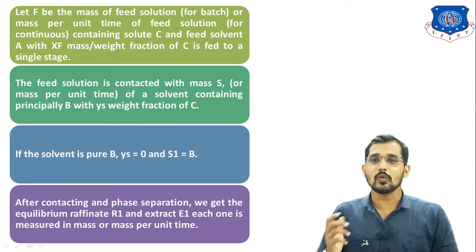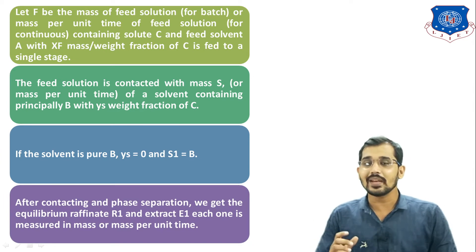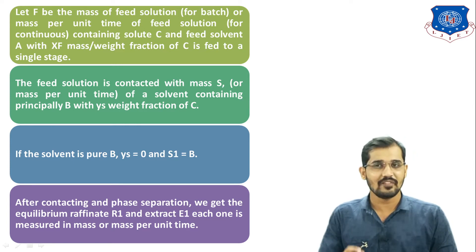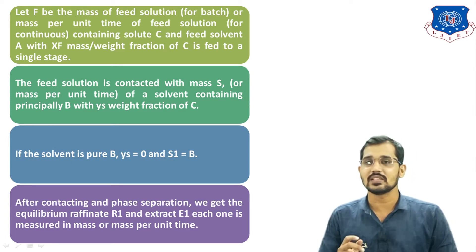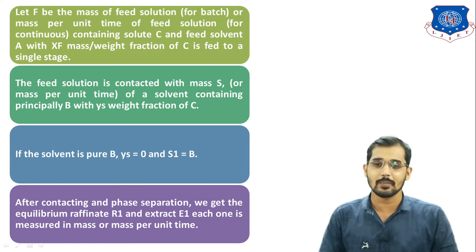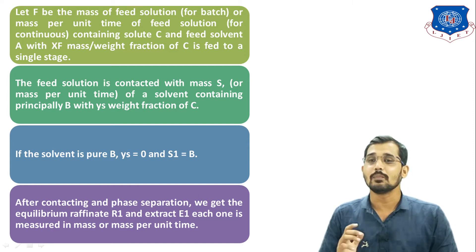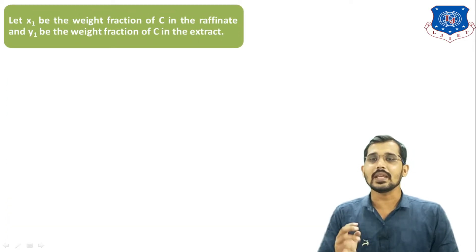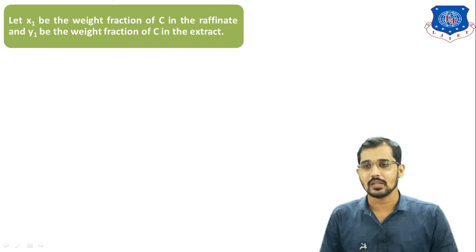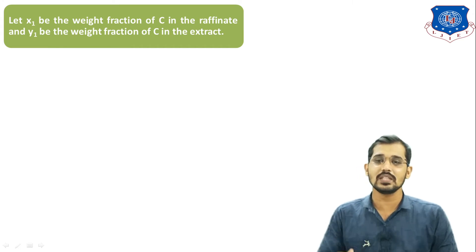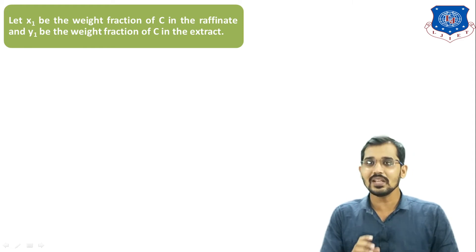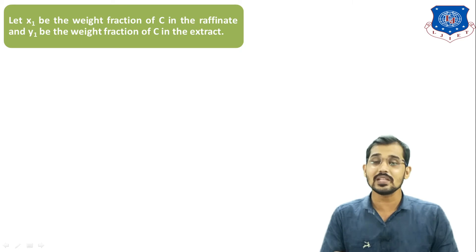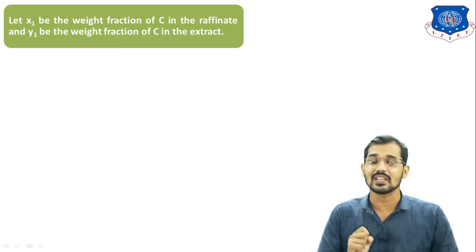After Liquid-Liquid Extraction, we get two outlet streams. The first is the raffinate, represented by R1, and the second is the extract, represented by E1 — these are the masses of the raffinate and extract phase respectively. Let X1 be the weight fraction of C in the raffinate and Y1 be the weight fraction of C in the extract. X1 represents the amount of solute in the raffinate and Y1 represents the amount of solute in the extract phase.